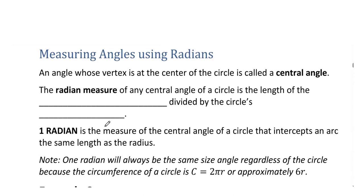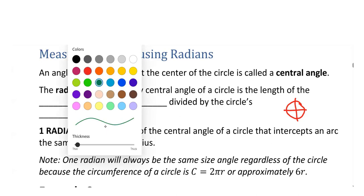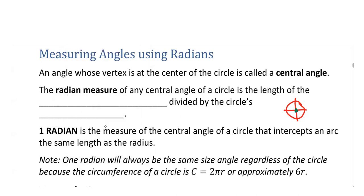Radians are the other units that we use to show an angle. An angle whose vertex is at the center of a circle is called a central angle. Every angle in standard form is a central angle, but you don't necessarily have to have the angle in standard form or even in the x-y coordinate system to be a central angle. It just has to be an angle where its vertex is at the center of a circle.